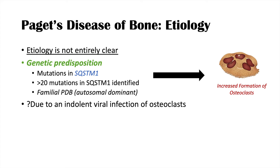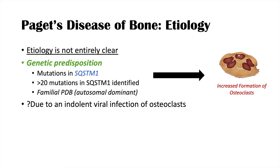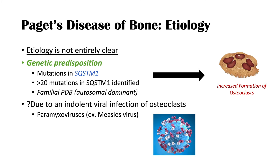There's also a theory that Paget's disease of bone may be due to an indolent or slowly progressive viral infection of osteoclasts. What is believed to happen is that paramyxoviruses, like a measles virus, infect the osteoclasts and increase their activity or the expression of aberrant osteoclasts. There's some evidence to support this, but we still don't have a clear picture yet.